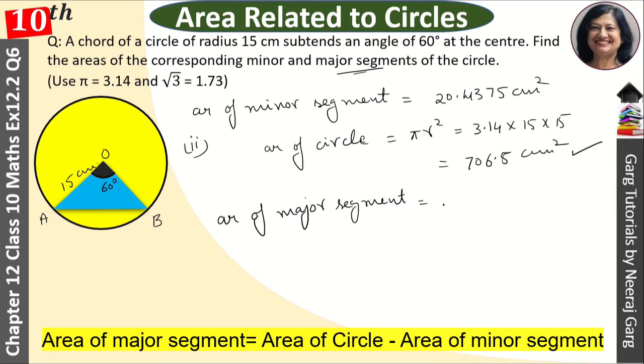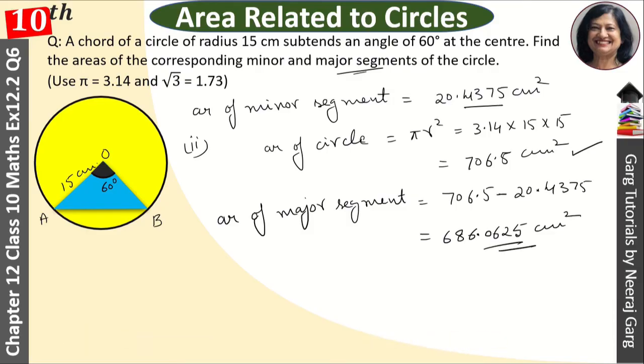How much is our area of circle? This is 706.5, and in this we will minus the area of minor segment, 20.4375. Now our answer will come, 686.0625 cm squared. I hope you will understand the question properly.